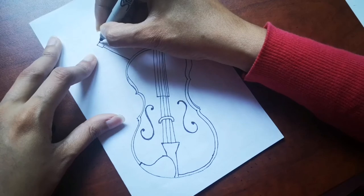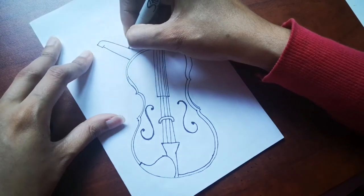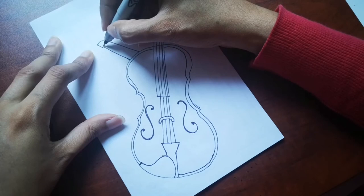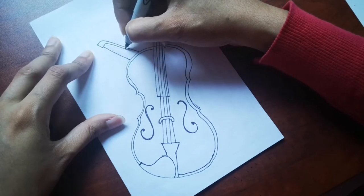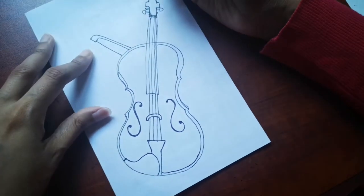So the violin is considered a string instrument which has four strings and is played with a bow.